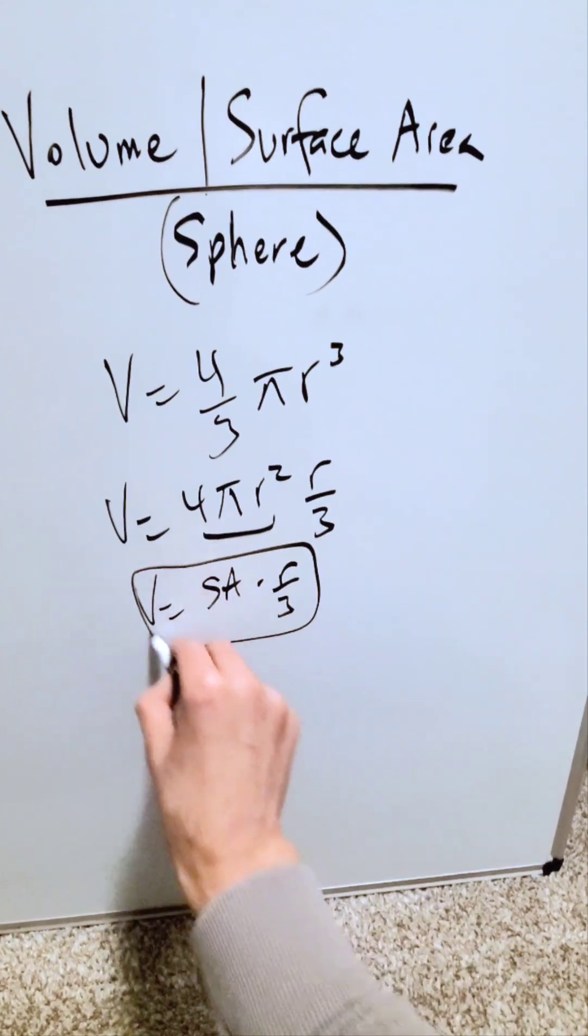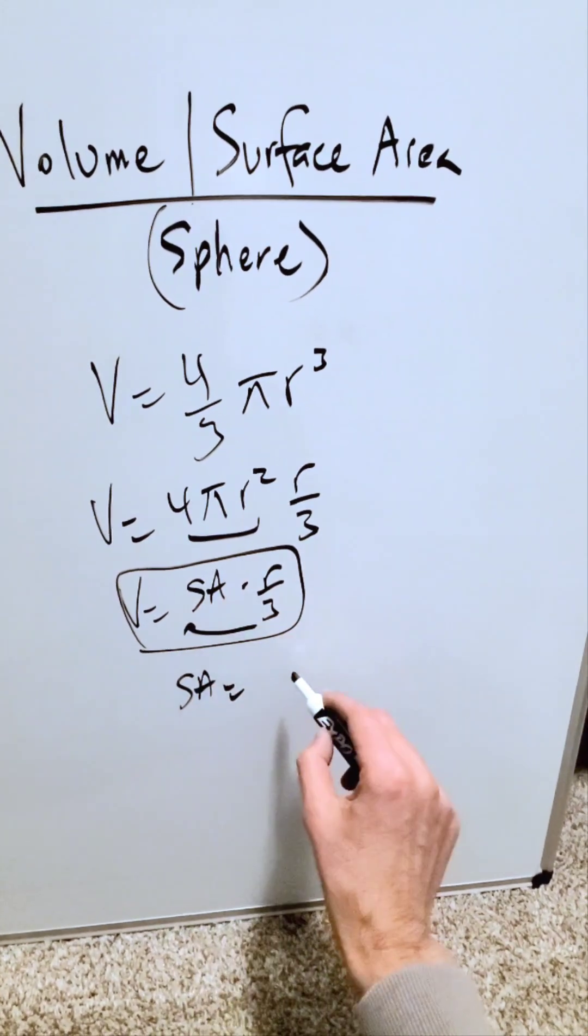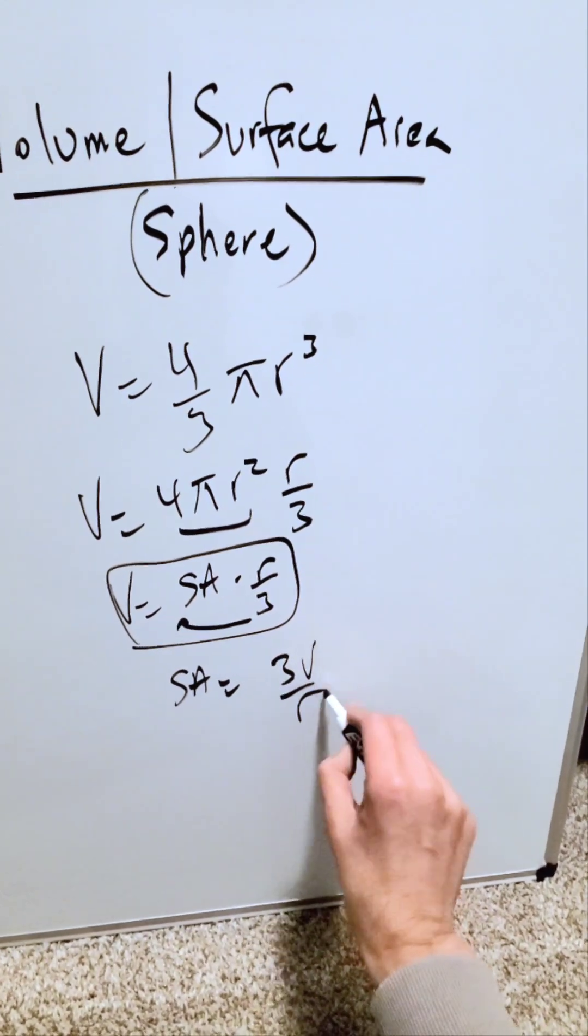Here's a relationship. If I were to solve from this relationship for the surface area, it is also equal to, you push everything on the other side, you'll have 3 times the volume divided by the radius.